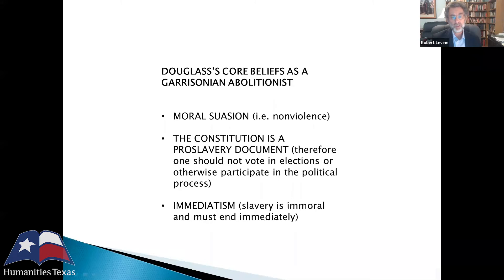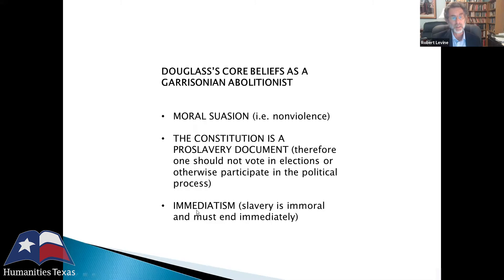I want to say a couple of things about Douglass's core beliefs as a Garrisonian abolitionist, because he changes some of these beliefs when he breaks from Garrison. Garrison argued for moral suasion and non-violence — that's really important, and Douglass will eventually shift his view on that. Garrison also argued that the Constitution is a pro-slavery document, and therefore one should not participate in American politics. He even said the North should break from the South, which Douglass didn't like because that would mean abandoning the slaves. Garrison also argued for immediatism — that slavery should just end immediately.